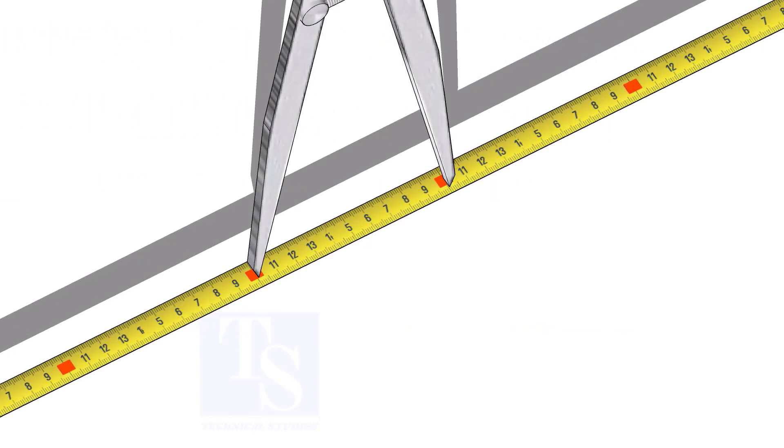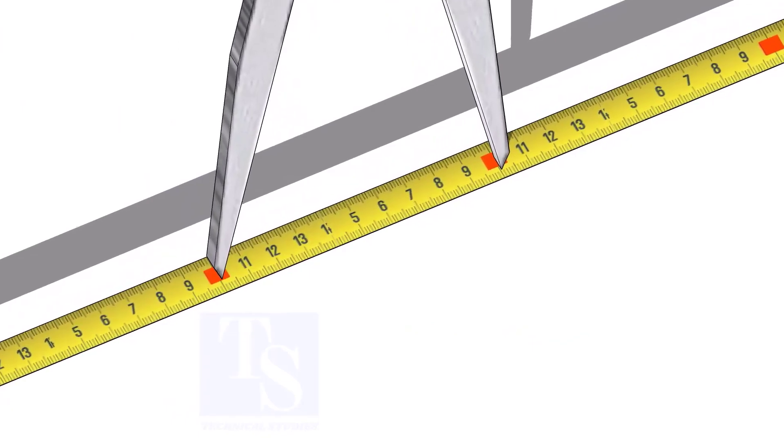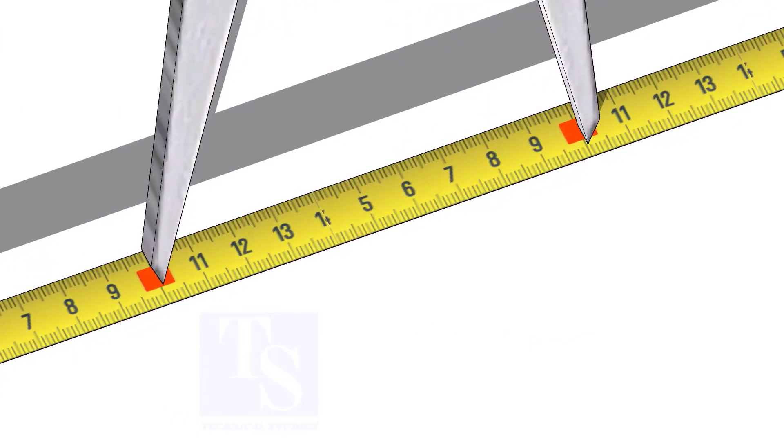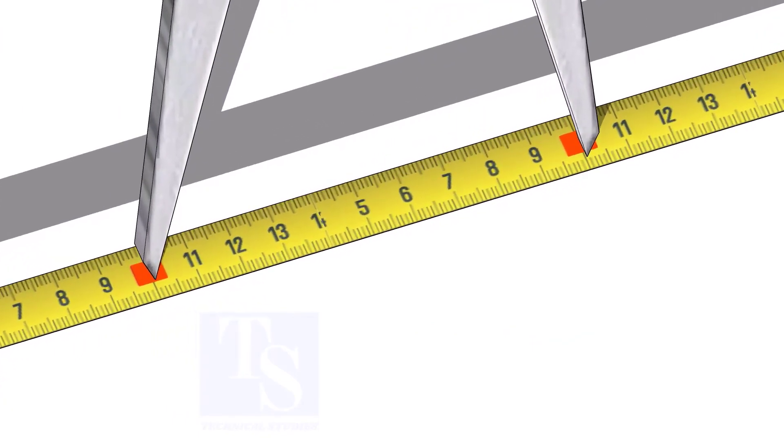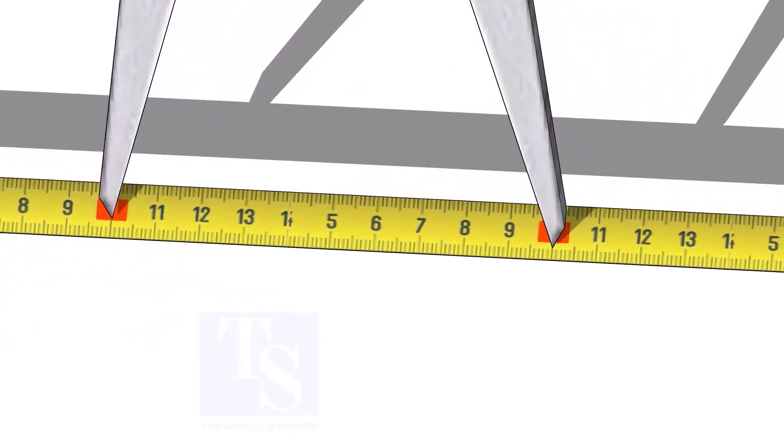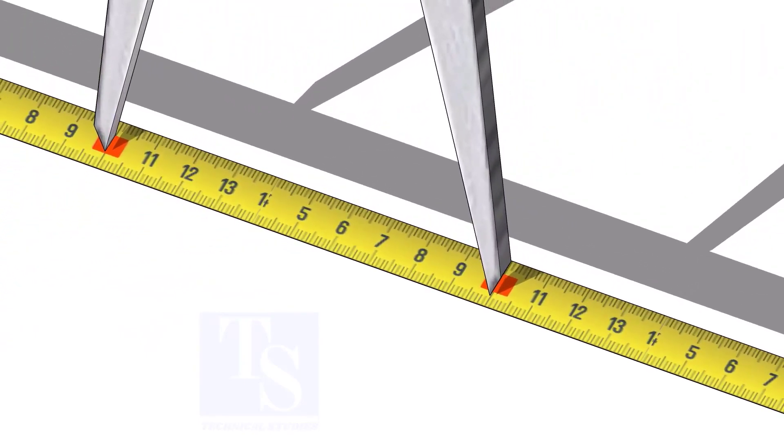Adjust the divider to 100 mm. Remember, this method is suitable for small diameter cones only. For large cones, you need to follow the cord length marking method.